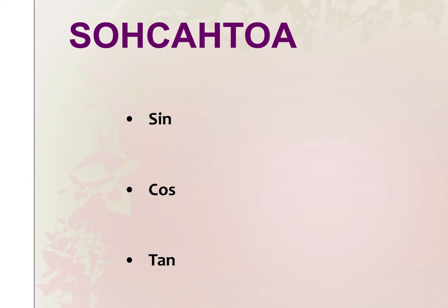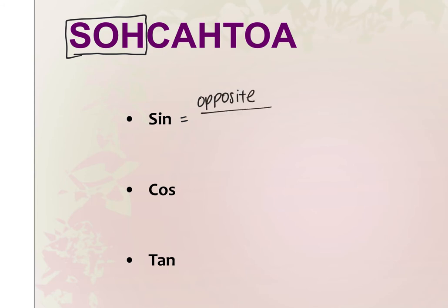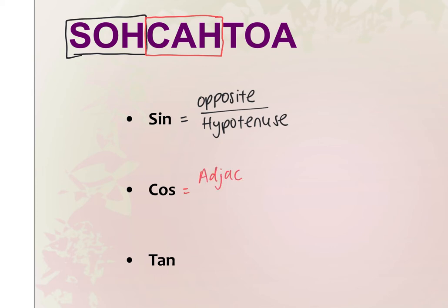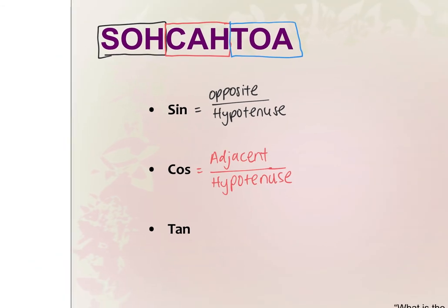Use three different colors. SOH is for sine. SOH stands for sine equals Opposite over Hypotenuse. CAH starts with C, so we're dealing with cosine. Cosine equals Adjacent over Hypotenuse. And TOA — TOA starts with T, so we're dealing with tangent. Tangent is Opposite over Adjacent. You guys will be using SOH-CAH-TOA for the rest of your math careers.